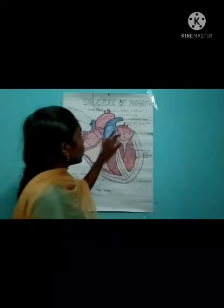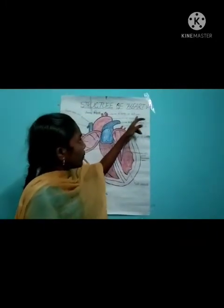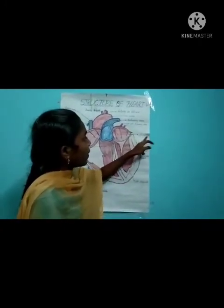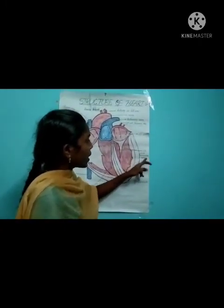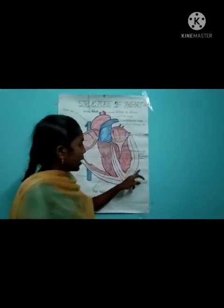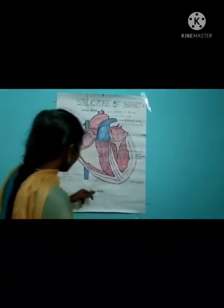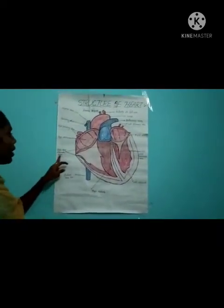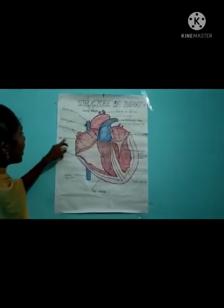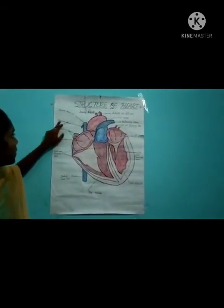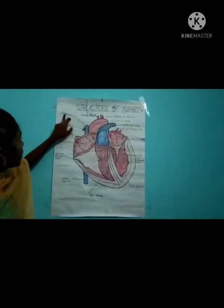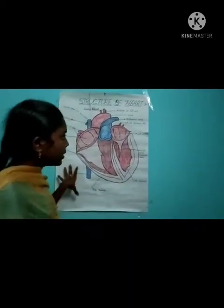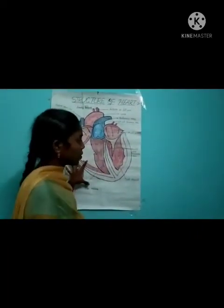The labeled parts shown here include: artery to left arm, pulmonary veins, pulmonary artery, left pulmonary veins, left ventricle, right ventricle, inferior vena cava, right pulmonary veins, pulmonary artery, superior vena cava, and artery to the head. This is the internal structure of the heart with labeled parts.